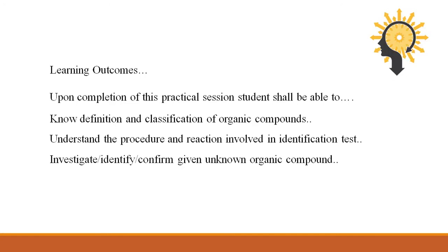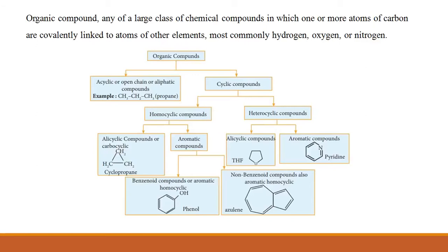Organic compounds are any of the large class of chemical compounds in which one or more atoms of carbon are covalently linked to atoms of other elements — mostly hydrogen, oxygen, or nitrogen. Basically, organic compounds are classified into two: acyclic or open chain (also called aliphatic compounds) and cyclic compounds. Cyclic compounds are again divided into two classes: homocyclic compounds and heterocyclic compounds.